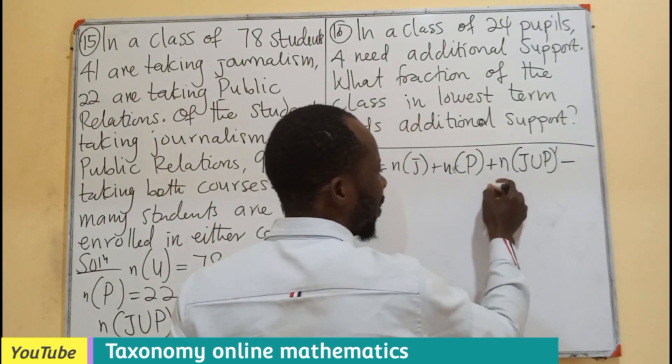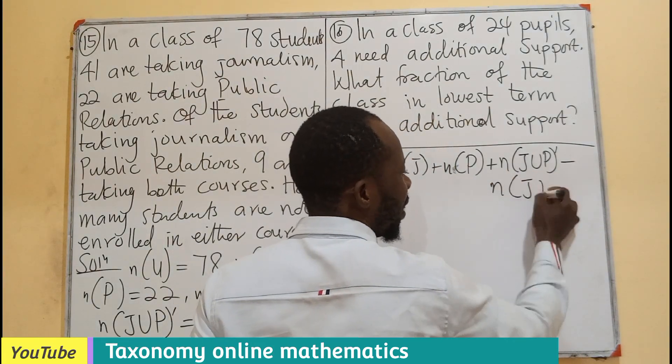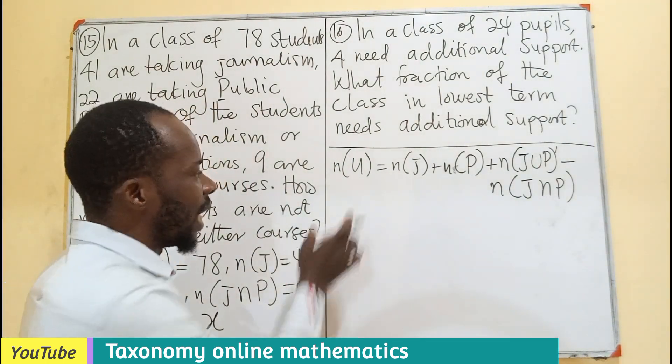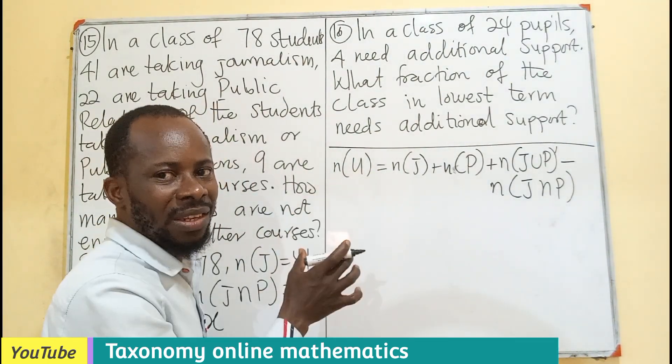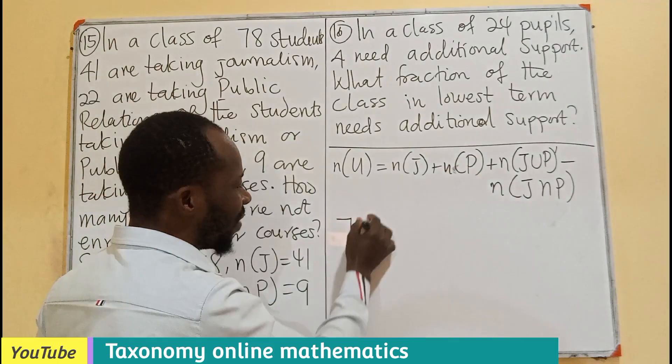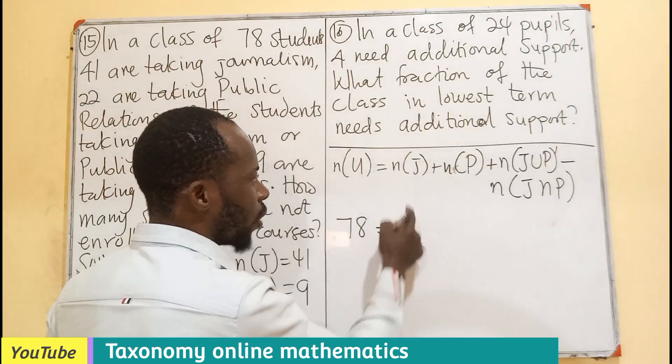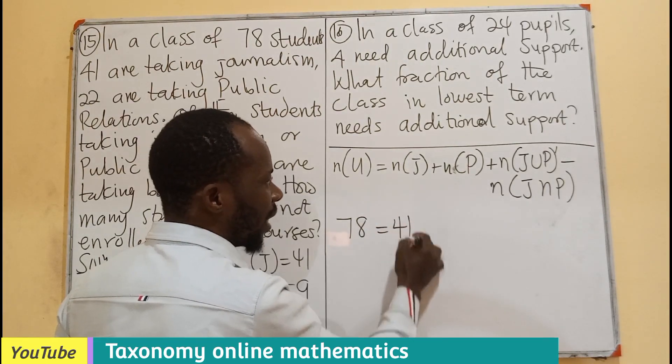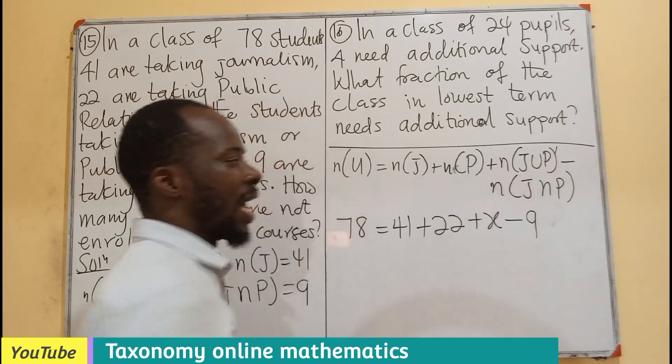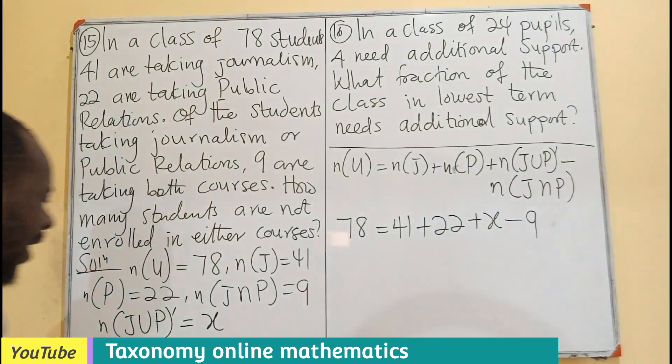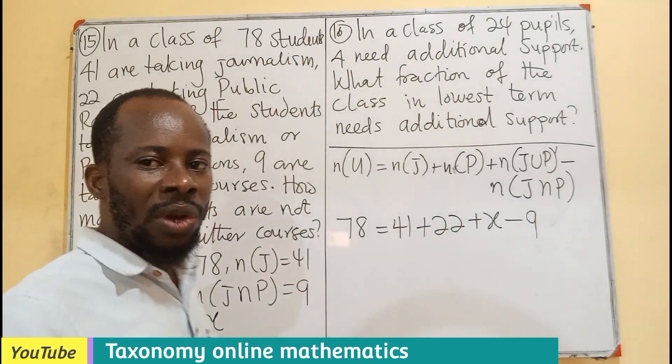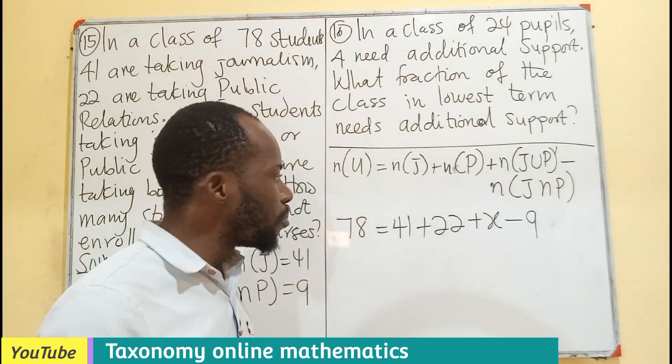The number of universal set is equals to the number of journalism plus the number of public relations plus the complement that we are interested in, which is number of J union P complement, minus the number of J intersection P, using the DeMorgan's theory. I believe you know that X stands in for the complement, those who are neither in the journalism class or public relations.